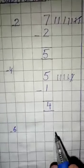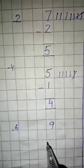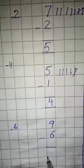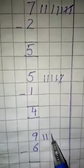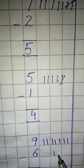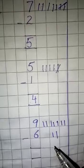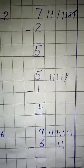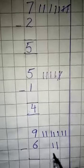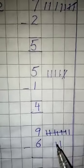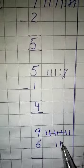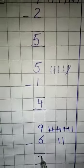Sixth question is 9 minus 6. First we draw 9 lines: 1, 2, 3, 4, 5, 6, 7, 8, 9. Now how many lines we cut? 6 — 1, 2, 3, 4, 5, 6. Now we will count the remaining lines: 1, 2, 3. We will write 3.